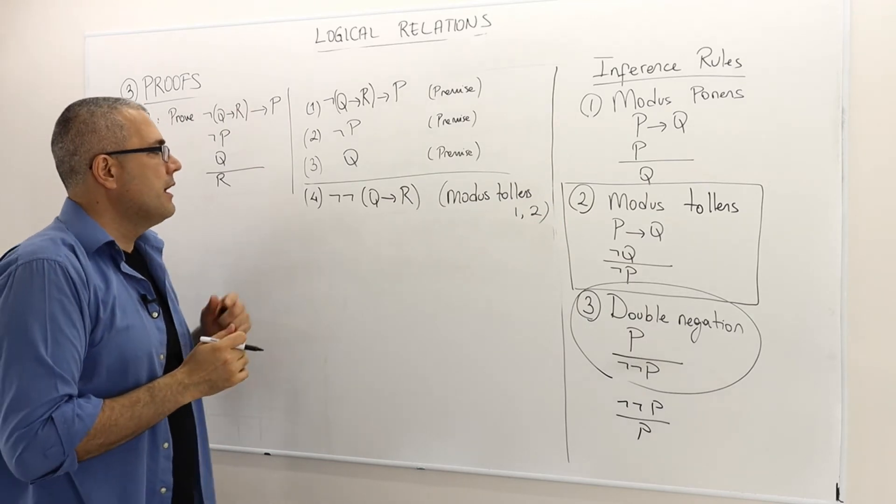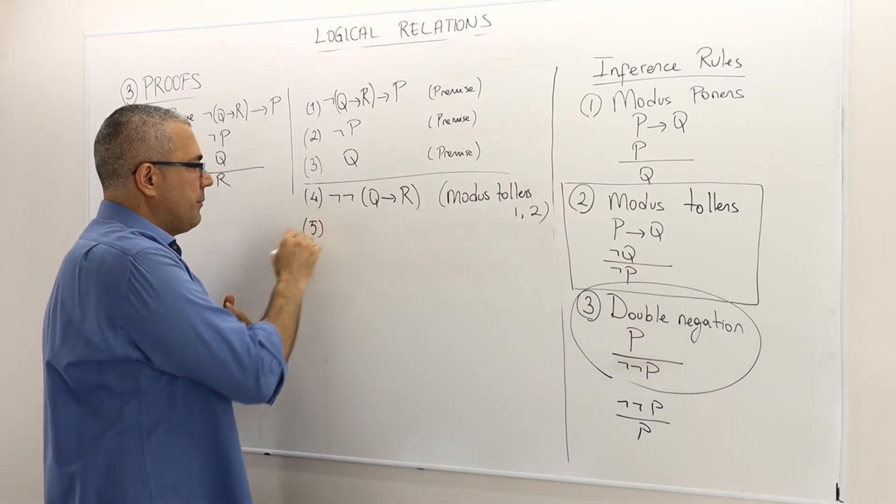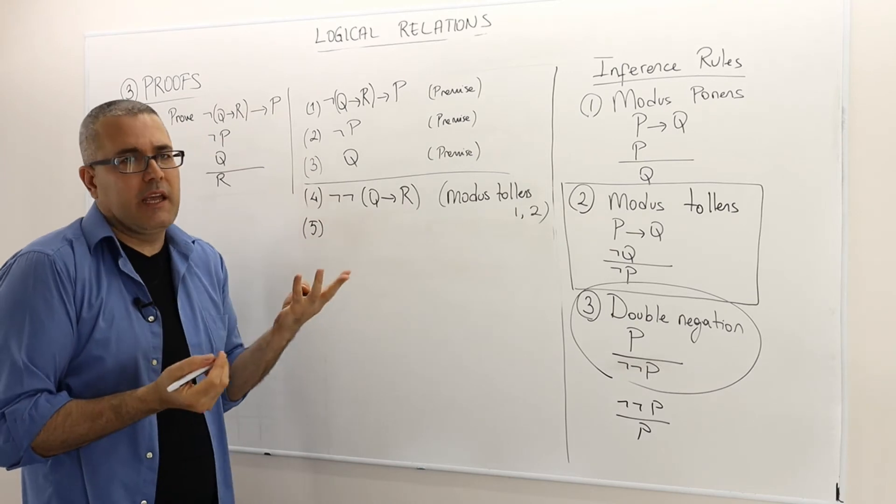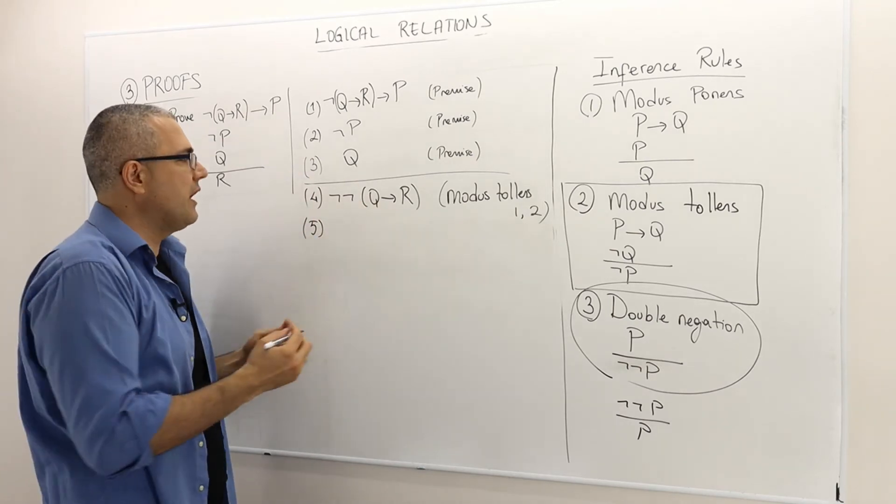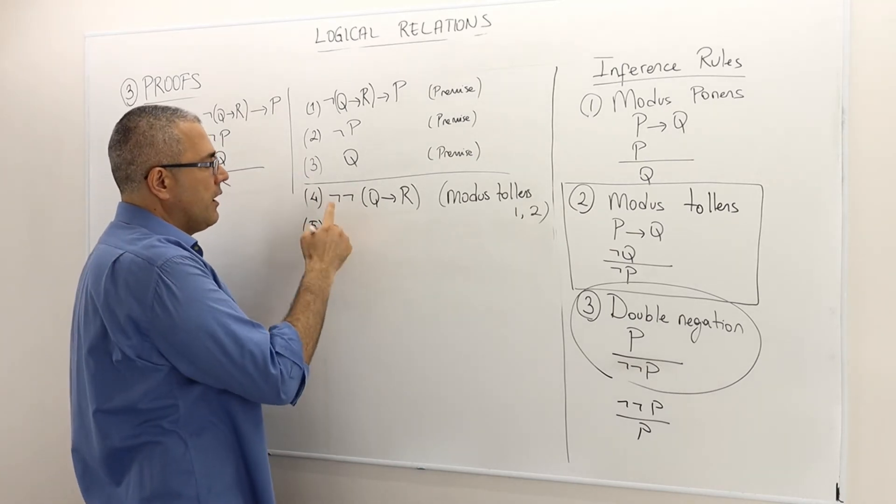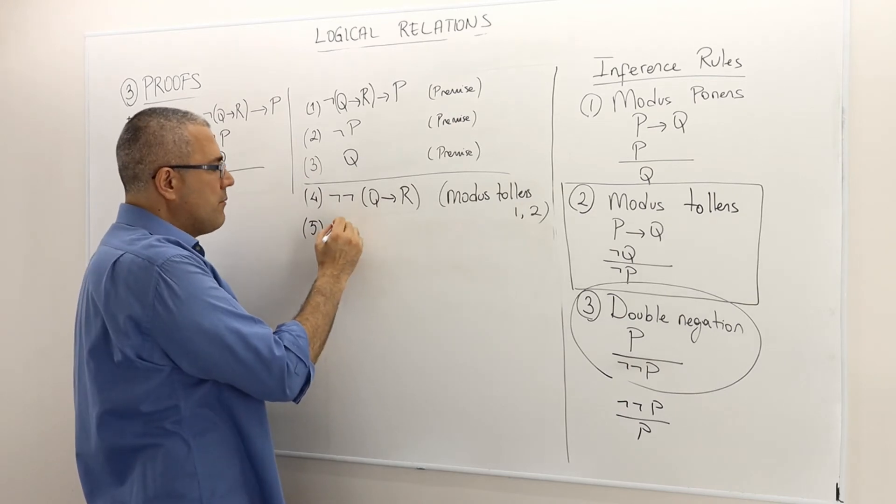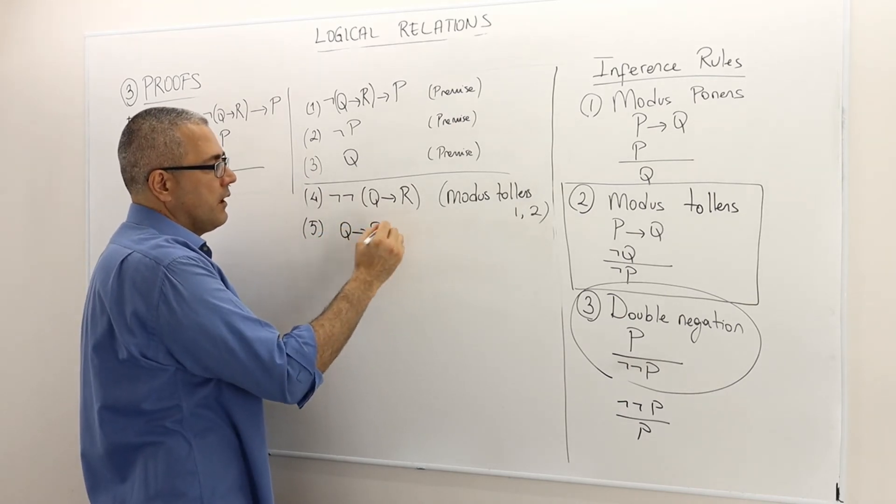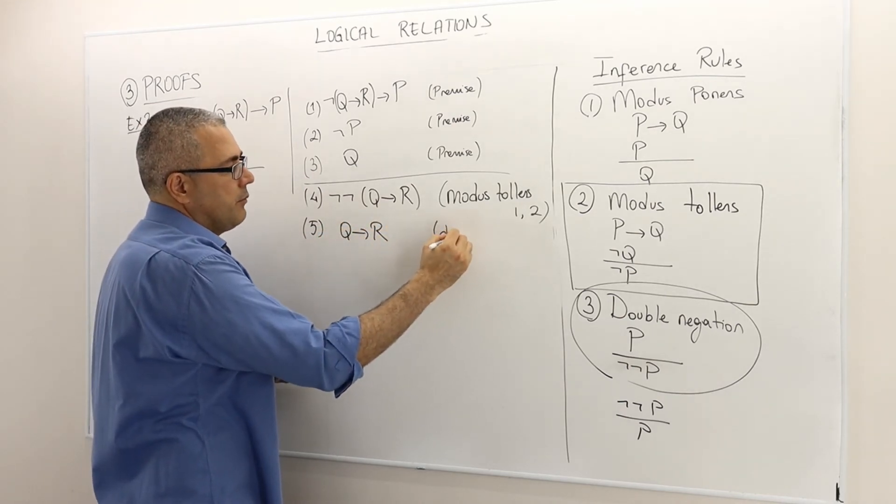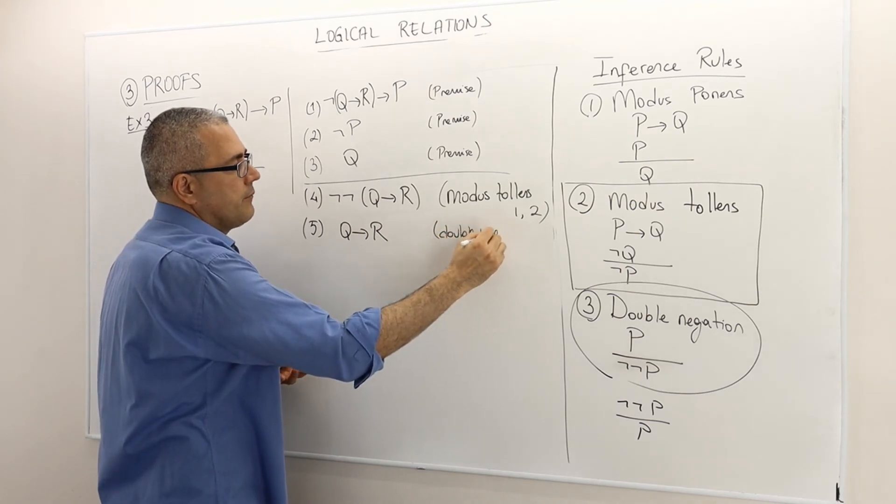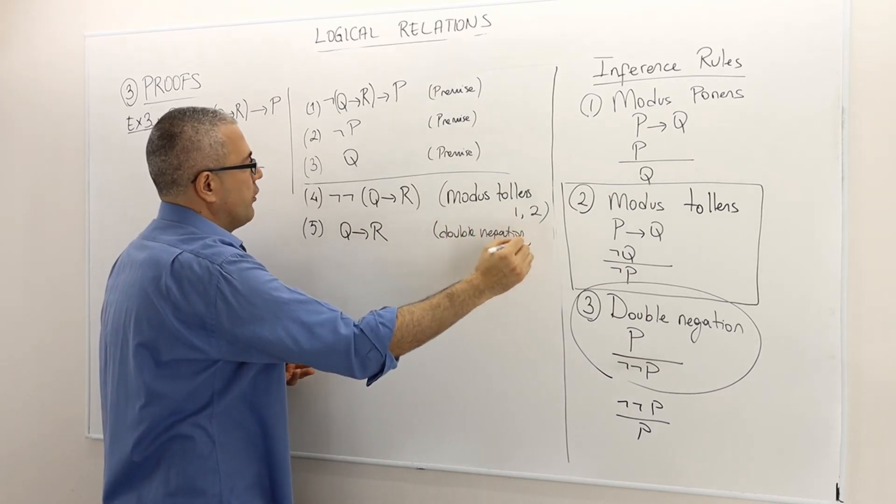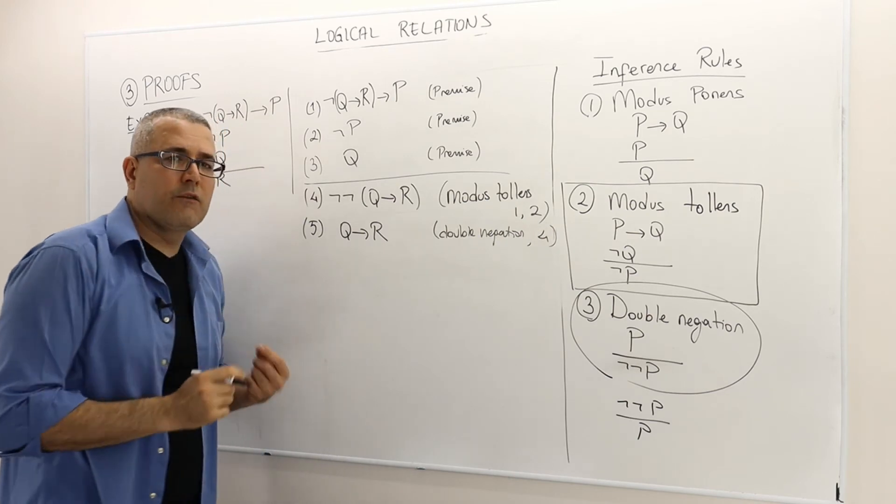Now the fifth step is easier because this is double negation of some sentence. So not not Q implies R must be equal to Q implies R. This is simply double negation of the argument in line 4.